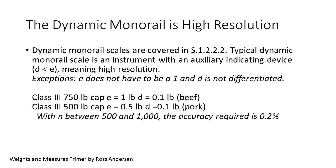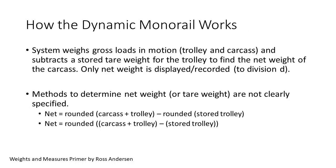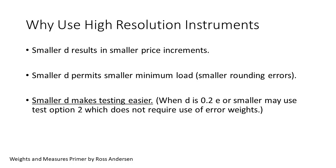Remember that for class 3 up to N equal 1,000, the accuracy is 0.2 percent. The dynamic monorail measures the gross load of the trolley and carcass in motion and then subtracts a stored tare weight to produce a net weight for the carcass. This is the only weight recorded for commerce. The code does not specify how to round the net calculations. The first calculation shown has two roundoffs and the second has only one. I believe most manufacturers have chosen the second option, and they typically store the tare weight to the internal resolution, meaning unrounded.